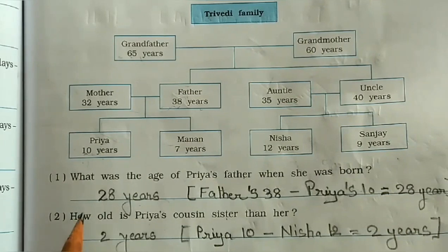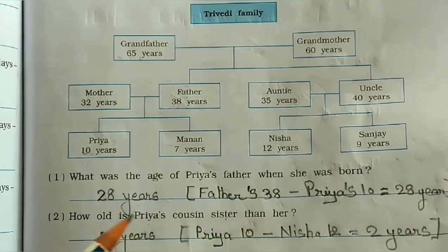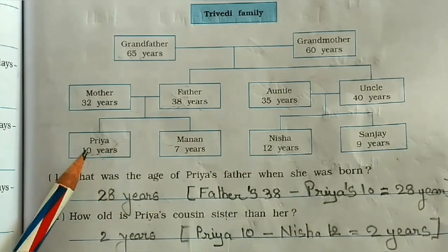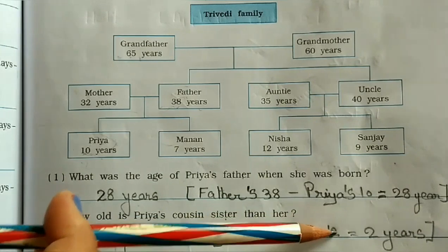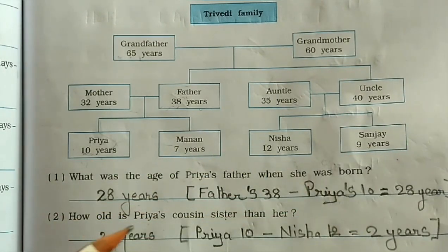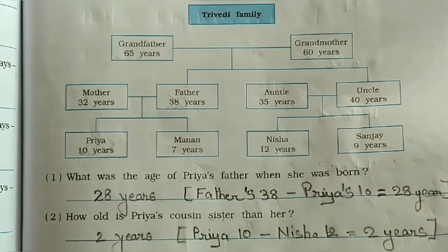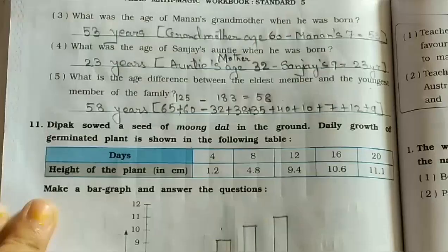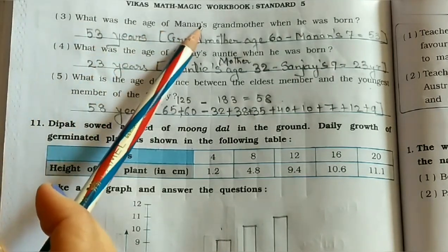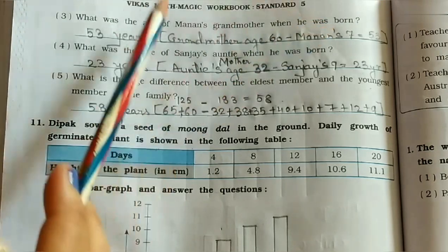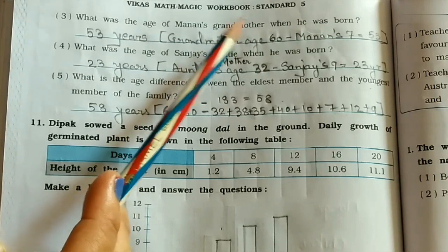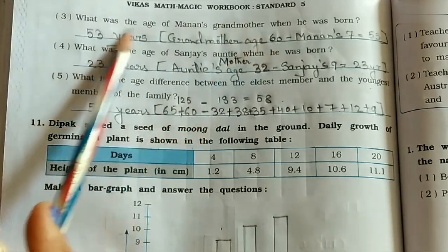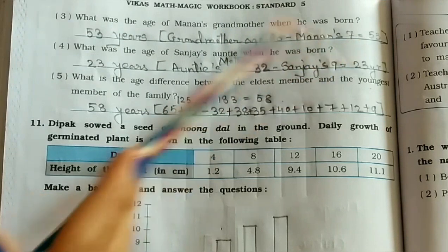Second question: how old is Priya's cousin sister Nisha compared to her? Nisha's age is 12 and Priya's age is 10, so 12 minus 10 equals 2 years difference. Third question: what was the age of Manan's grandfather when Manan was born? Manan's grandmother age is 60 and Manan is 7, so 60 minus 7 equals 53 — grandmother's age was 53 when Manan was born.